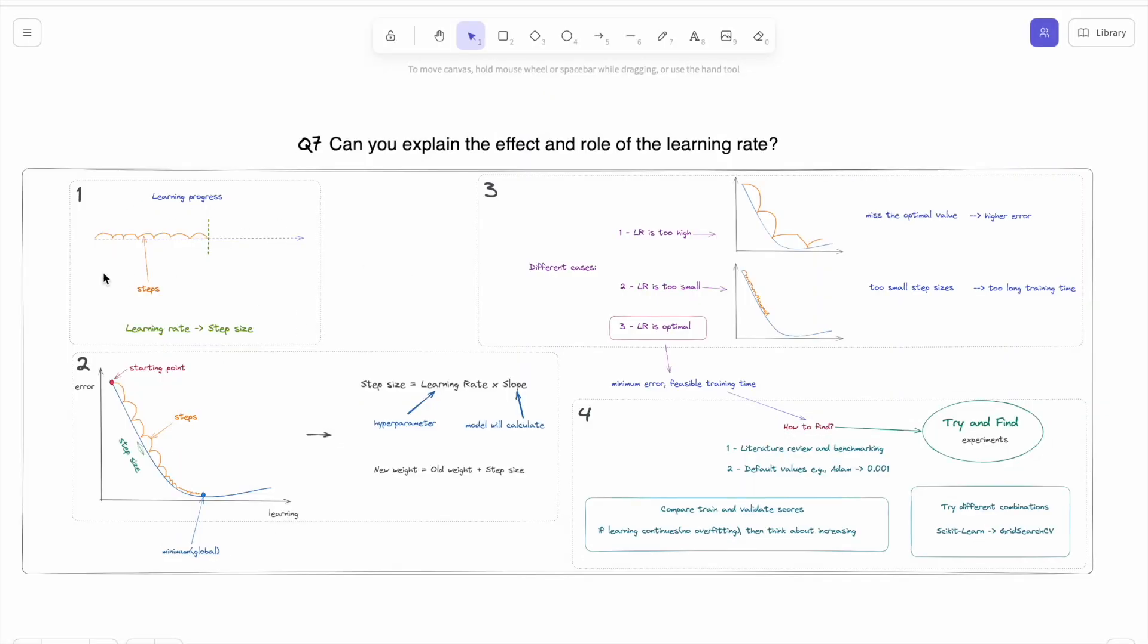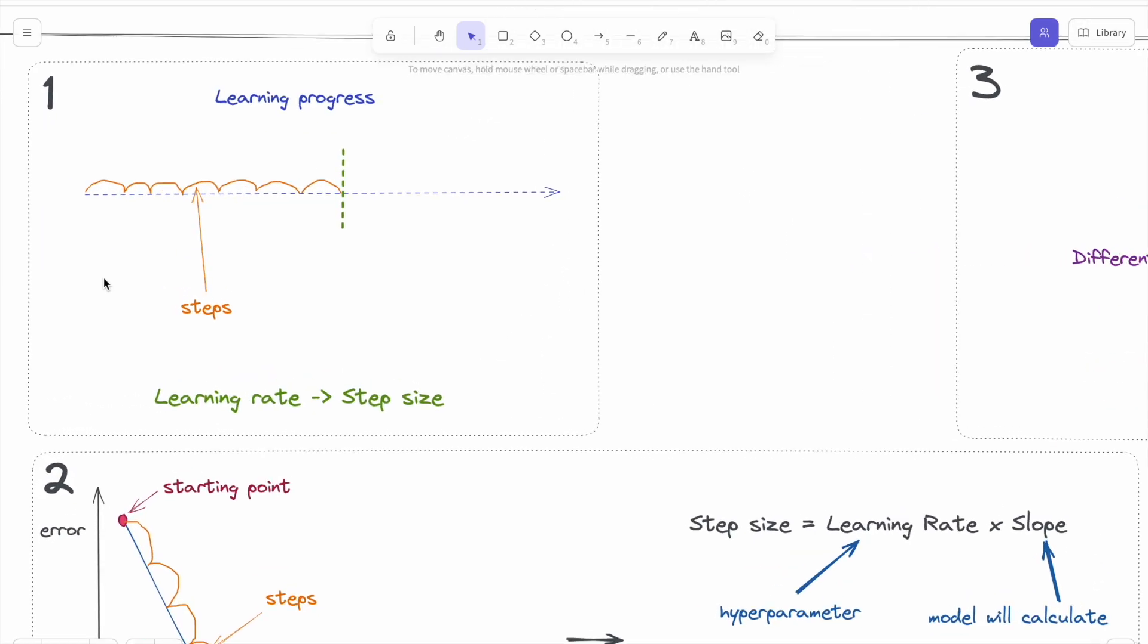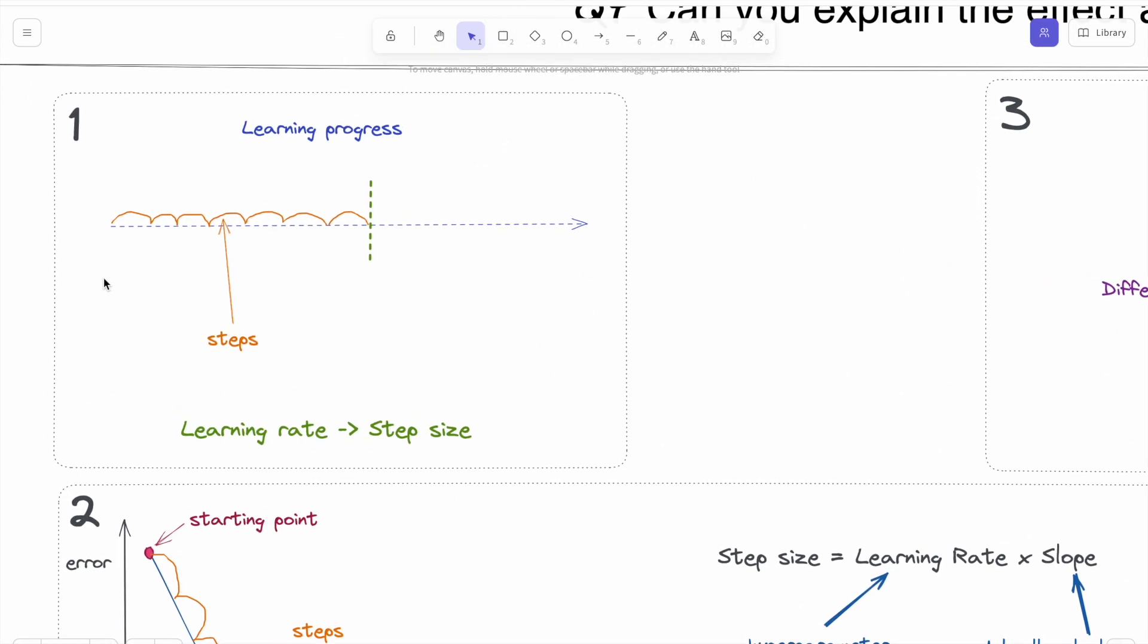First of all, to understand the learning rate, we should keep in mind that learning is a progress. Our model, step by step, will learn and try to generate the best outputs.